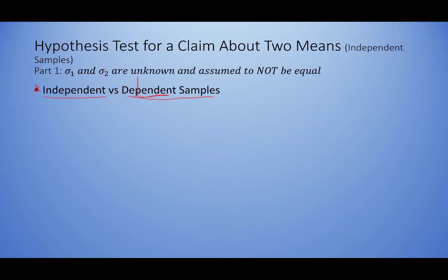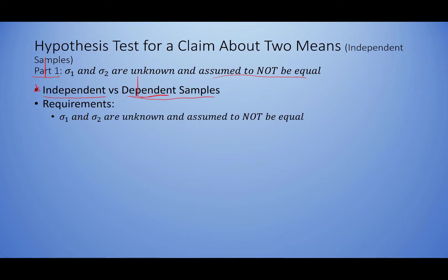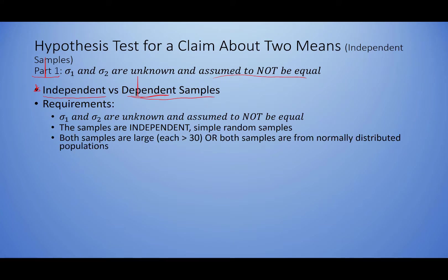We are going to have three different situations. The first one is when we do not know the population standard deviation for either of our samples — sample one or sample two — and we are going to assume that those standard deviations are not equal to each other. The requirements are: σ₁ and σ₂ are unknown and not equal, the samples must be independent simple random samples, and both samples are either larger than 30 so we can use the central limit theorem, or both come from a normally distributed population.